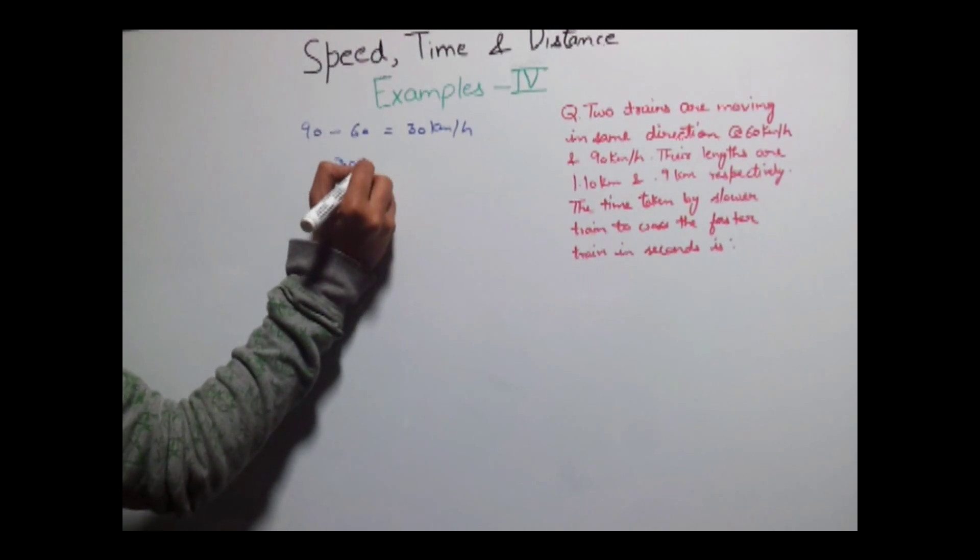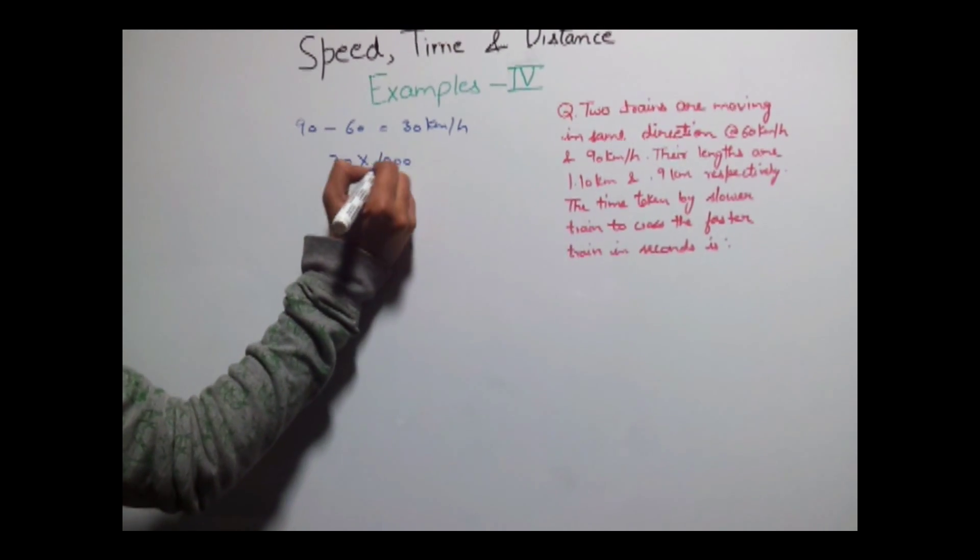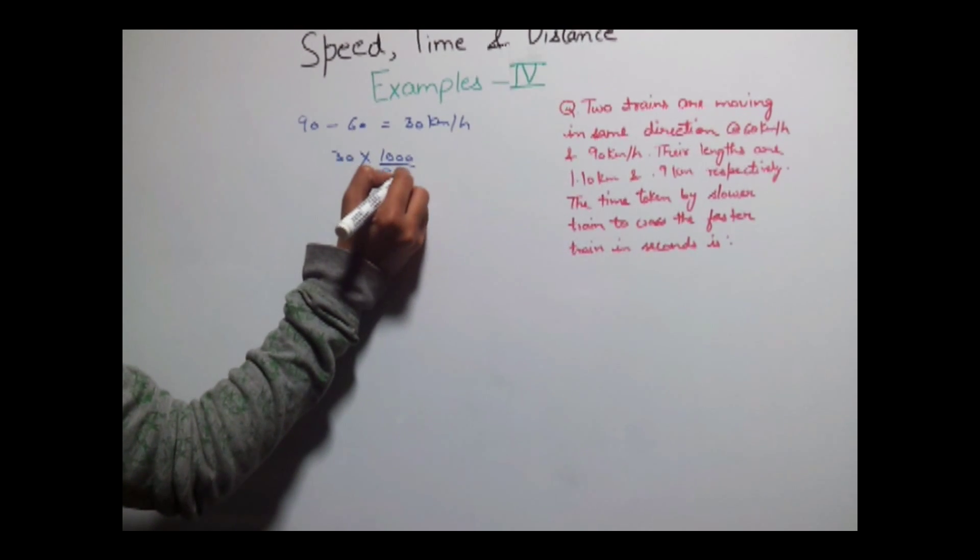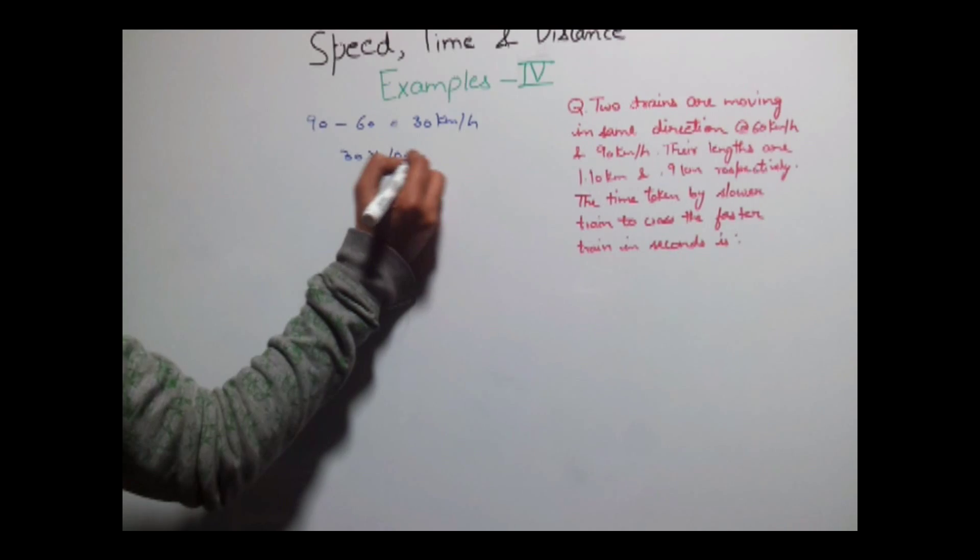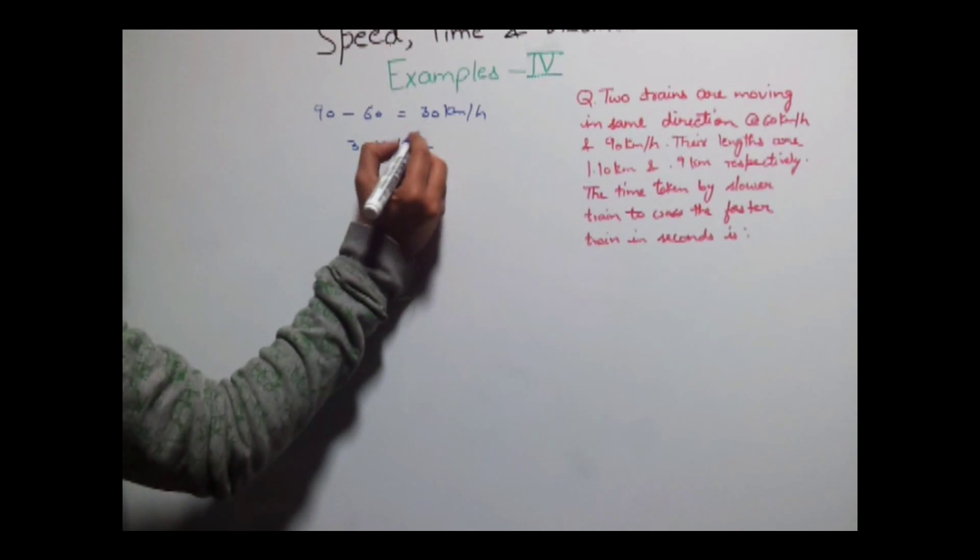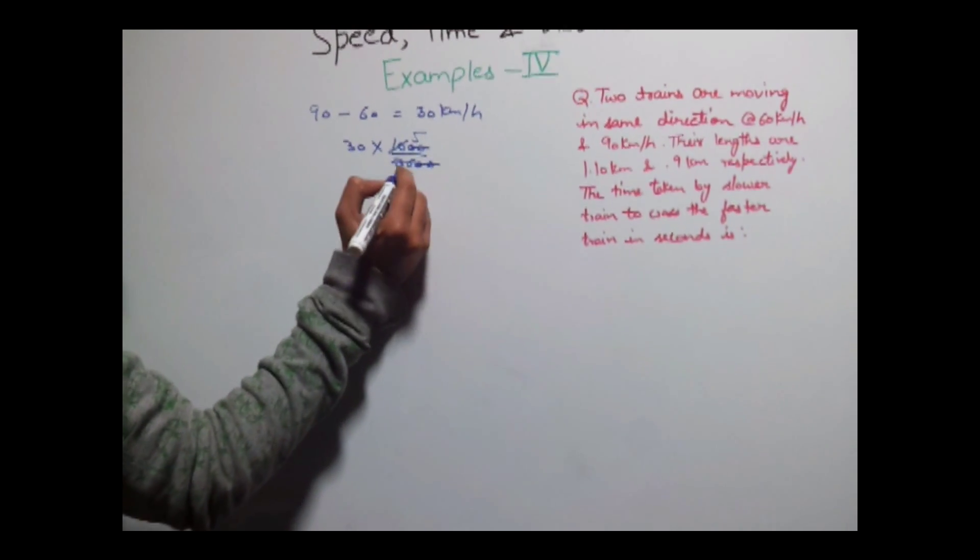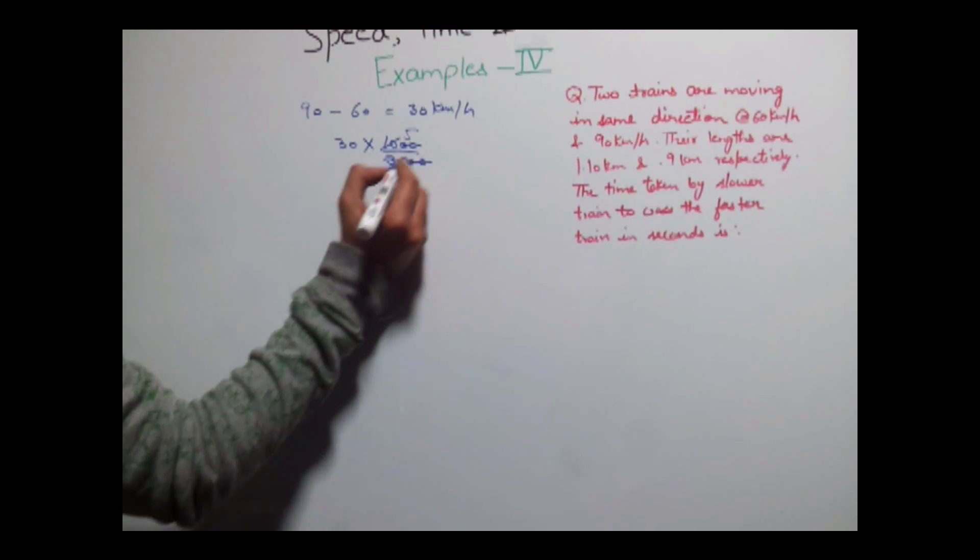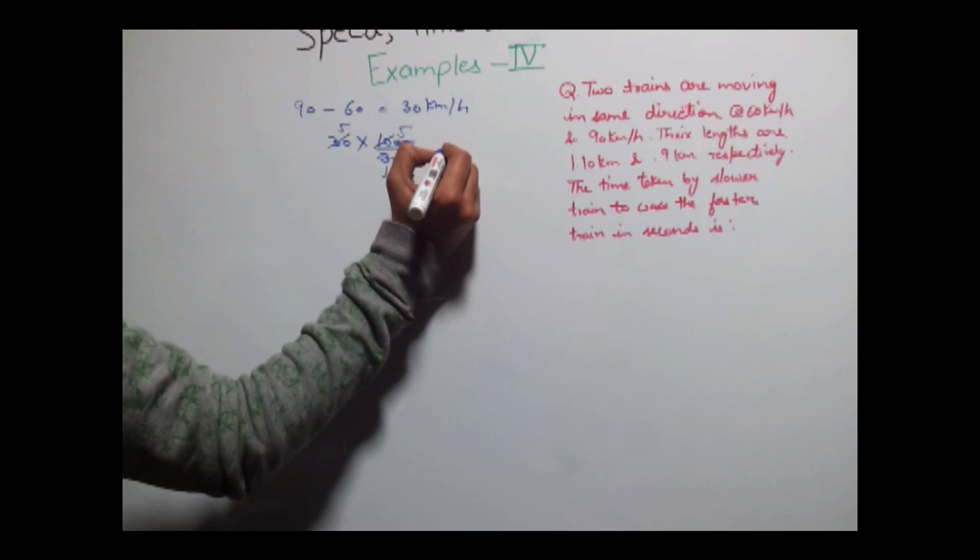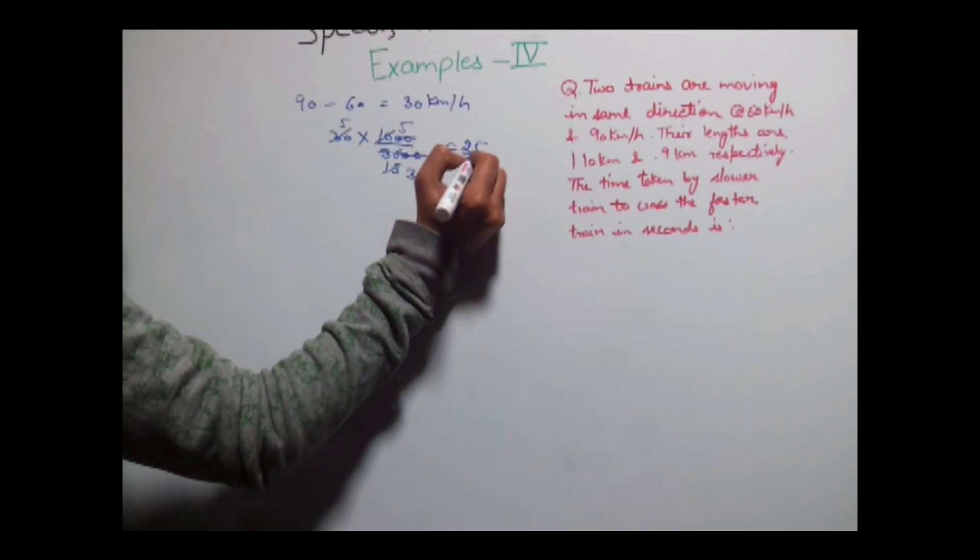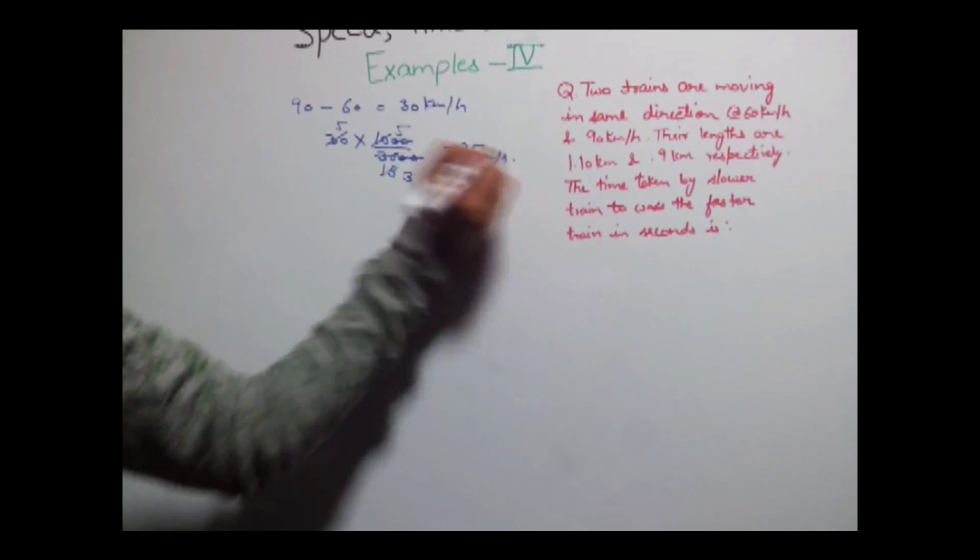To convert this into meters per second simply multiply it by 1000 divided by 3600 or you can multiply by 5 by 18. Now 6 into 3 is 18, 6 into 5 is, that is 25 by 3 meters per second.